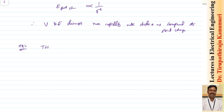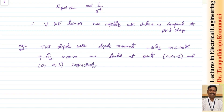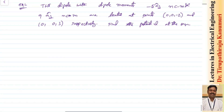Now I am taking one example. Two dipoles with dipole moments minus 5 a_z nano Coulomb-meter and 9 a_z nano Coulomb-meter are located at points (0, 0, minus 2) and (0, 0, 3) respectively. Find the potential at the origin.